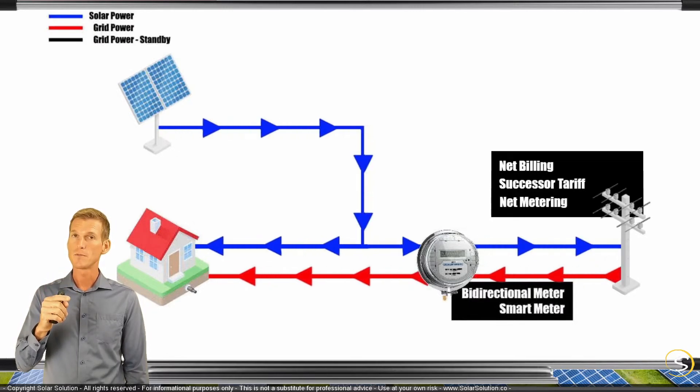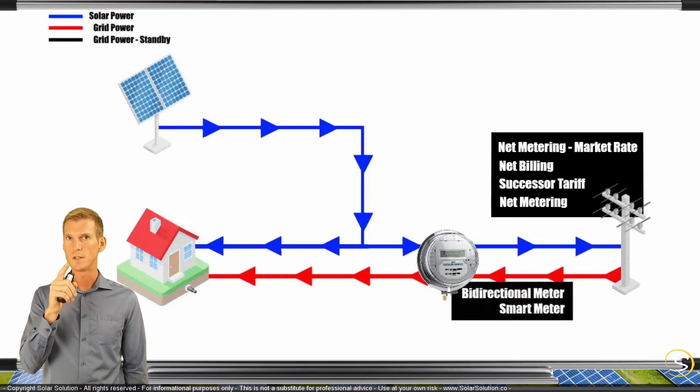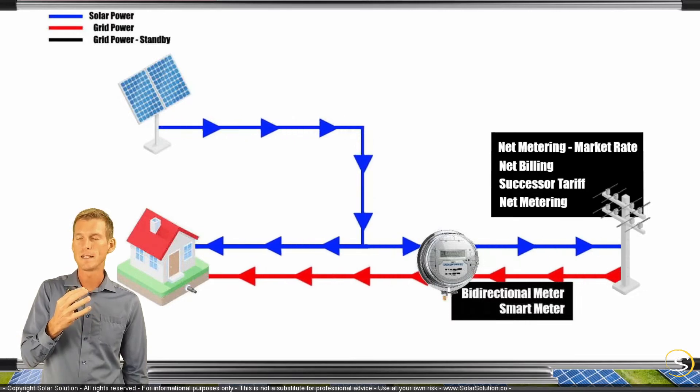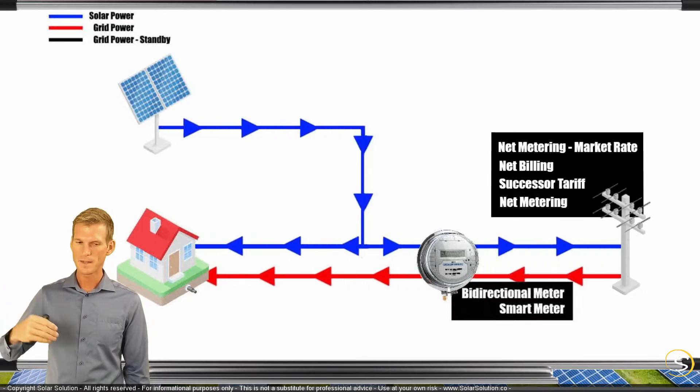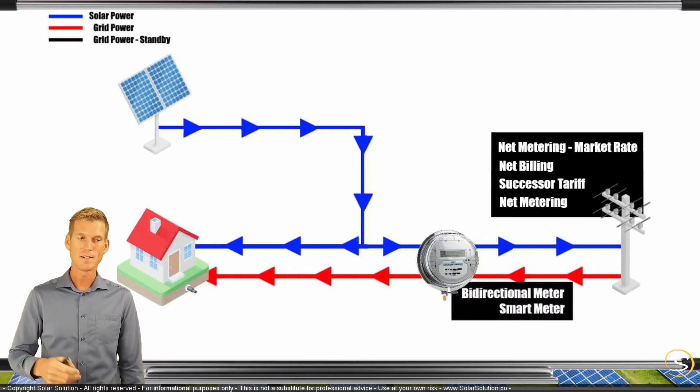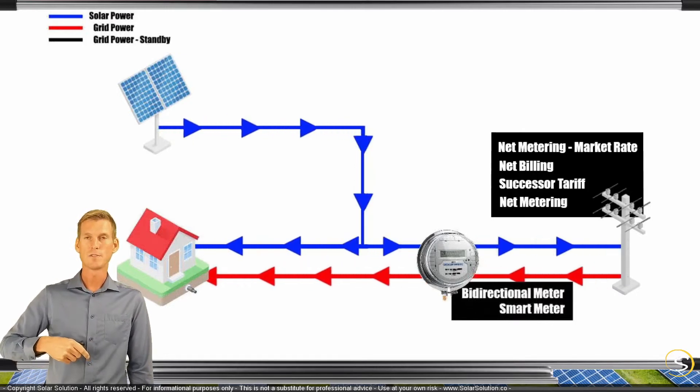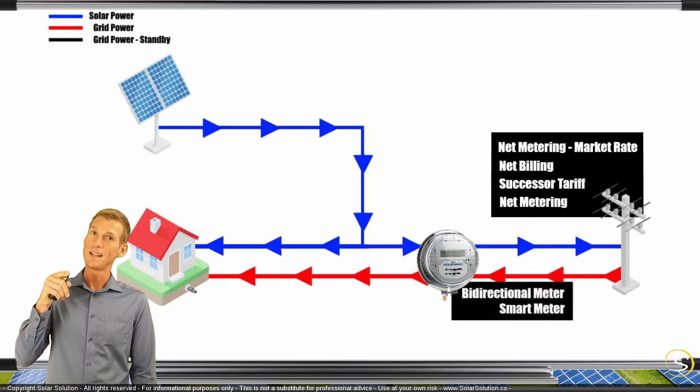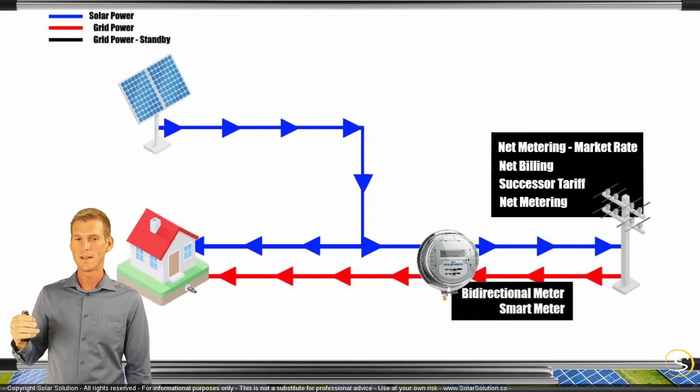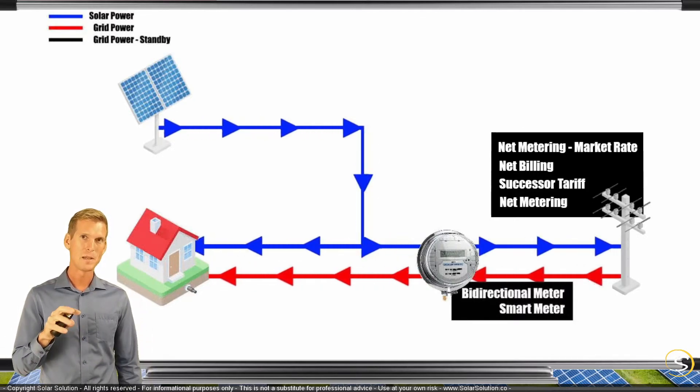Then there's net metering at the market rate, which is quite interesting because they use time of use measurement. They will compensate you for the power you're feeding into the grid depending on which time you're doing it, corresponding to the market rate at that time. In the afternoon, electricity prices are higher, so if you're feeding into the grid at that point, you're compensated at the higher kilowatt-hour price.